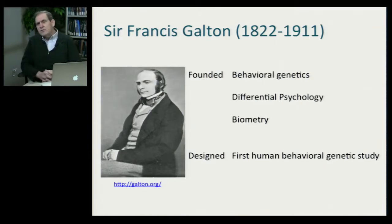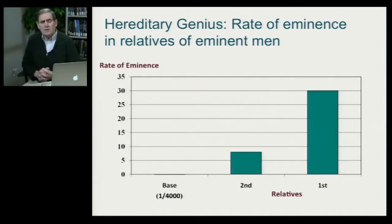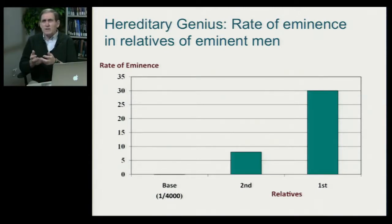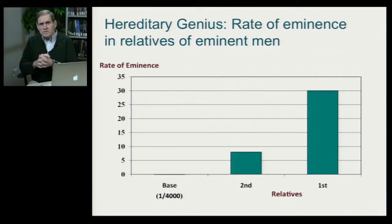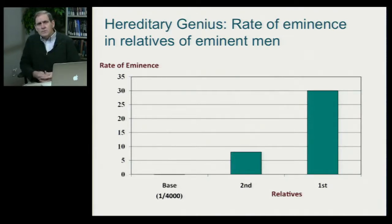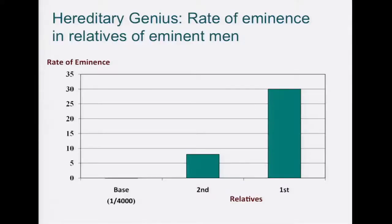In 1869, he actually did the first large-scale behavioral genetics study, called Hereditary Genius, published in a book that same year. Galton took what he considered eminent men — humanists, poets, philosophers, scientists, politicians, military men. He only studied men because of the recognition that in Victorian England, women's opportunities to achieve socially were constrained. He studied their relatives, and what he observed was that by his definition of eminence, one out of 4,000 men were eminent. But among first- and second-degree relatives, he saw very strong familial resemblance — indeed, a 1,000-fold increase in the rate of eminence among first-degree relatives of eminent men.